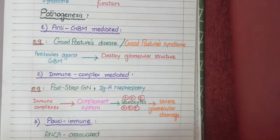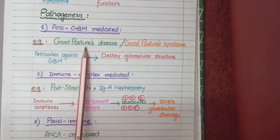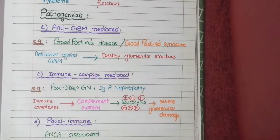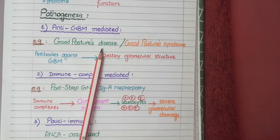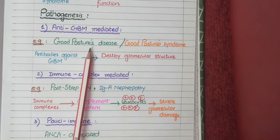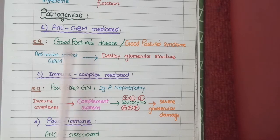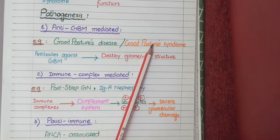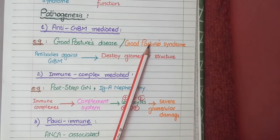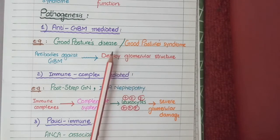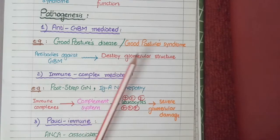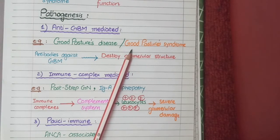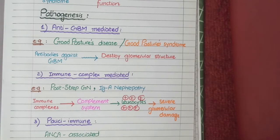Here I also want to mention the difference between Goodpasture's disease and Goodpasture syndrome. In Goodpasture's disease, the antibodies that are developed attack only the glomerular basement membrane of the kidneys. While in Goodpasture syndrome, these antibodies not only attack the glomerular basement membrane of kidneys but also cause damage to the lungs. So Goodpasture syndrome is a more extensive category that is not confined to kidneys but can also involve the lungs.